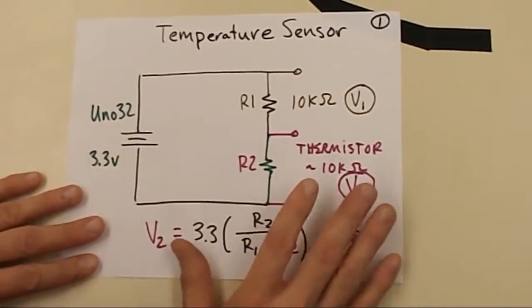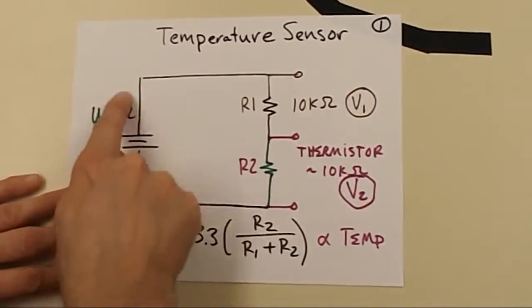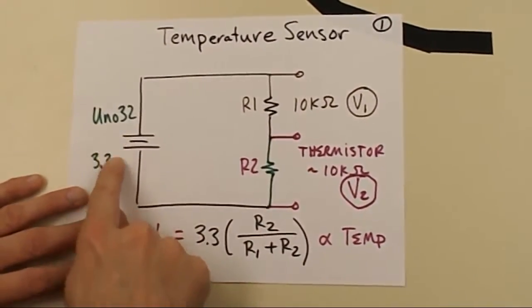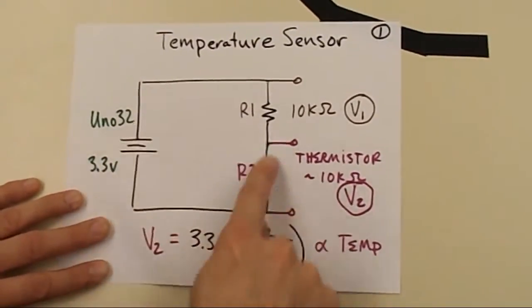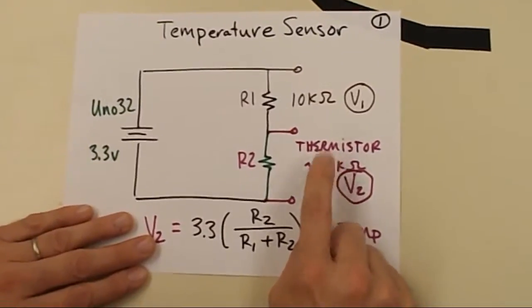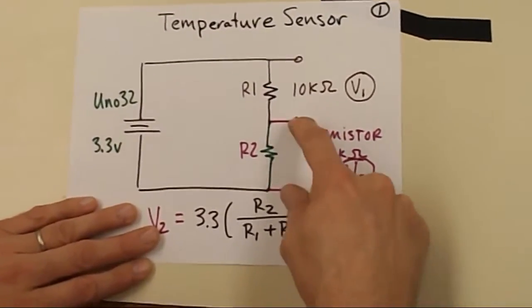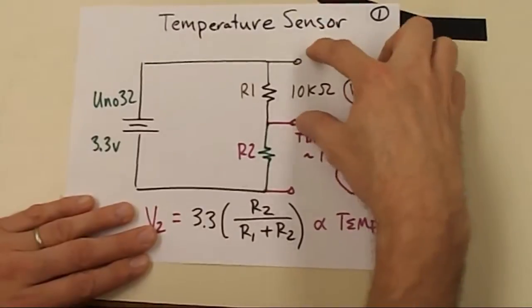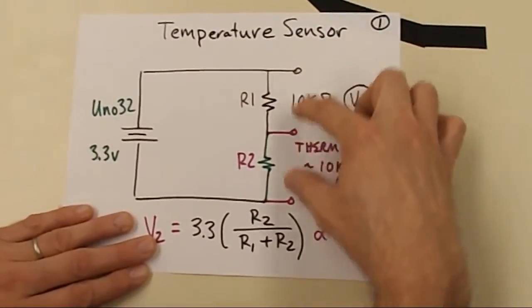So let's talk about the temperature sensor. In the reading, I'm just going to review the reading a little bit. Our UNO32 is going to provide 3.3 volts to our two resistor series circuit. Our thermistor, which is going to detect our temperature changes, is one of the resistors in that circuit. We also have a 10,000 ohm resistor in series with it.